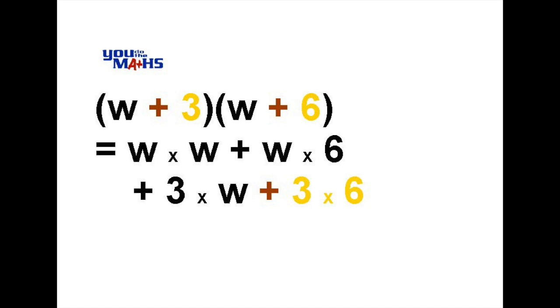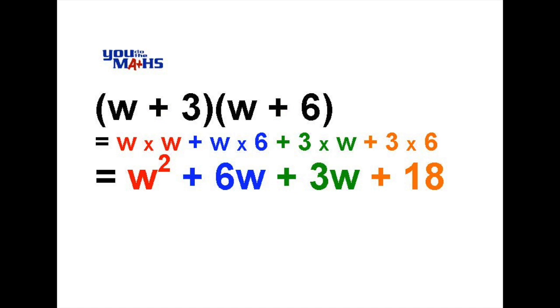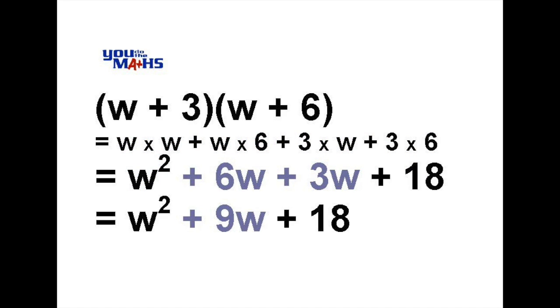We'll simplify each one of those products there, so we end up with W squared, a 6W and a 3W and then add 18. What we'll look to do now is add the like terms. We can see we've got two W terms, so 6 plus 3 gives us 9W. And our final answer is W squared plus 9W plus 18.